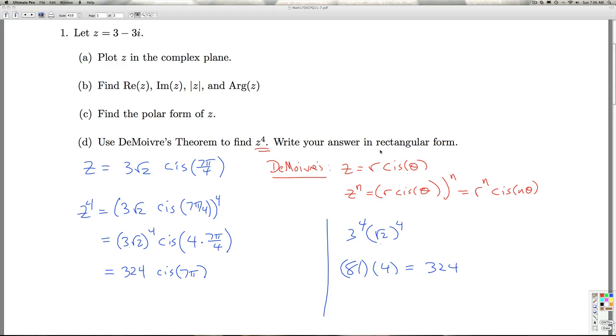And we're asked to write our answer in rectangular form. So I go back and expand this out. This is 324 times cosine of 7 pi plus i times the sine of 7 pi. So 7 pi is an odd multiple of pi. That means when I graph 7 pi in standard position, it's going to end up on the negative x axis. So cosine is negative 1. Sine is 0. And so when I simplify this, I just get 324. So that'll do it for part D.